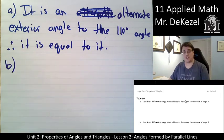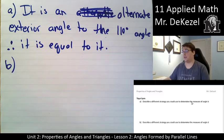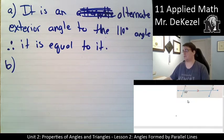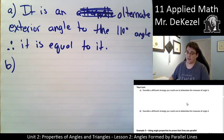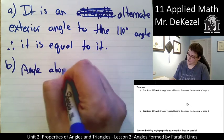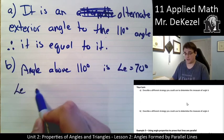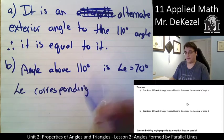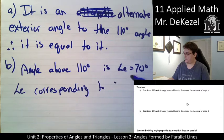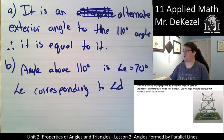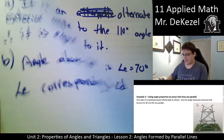Part B asked: describe a different strategy you could use to determine the measure of angle D. The angle above 110 — we could call it angle E — is equal to D. It is a corresponding angle to D. So the angle above 110 degrees, angle E, would be 70 degrees, and angle E is corresponding to angle D. That would be another way we could find angle D. If you have questions, please let me know.